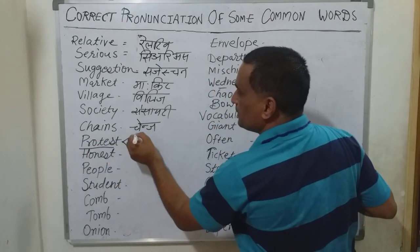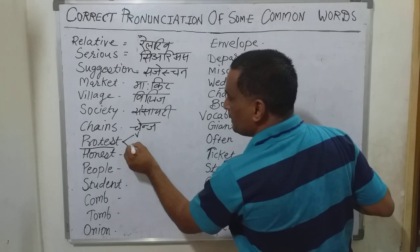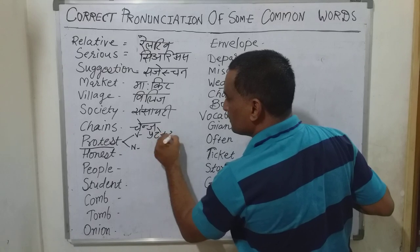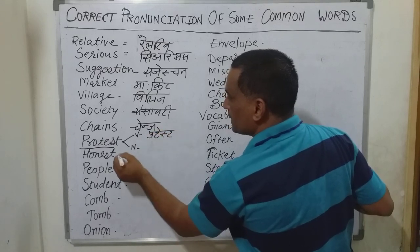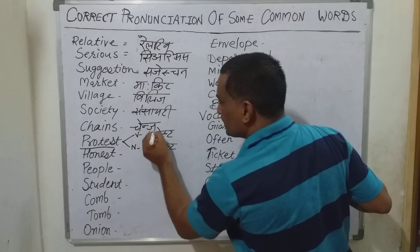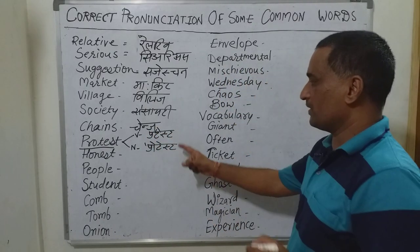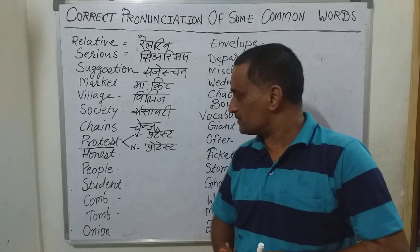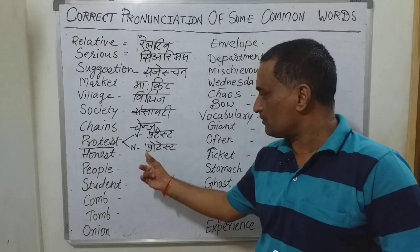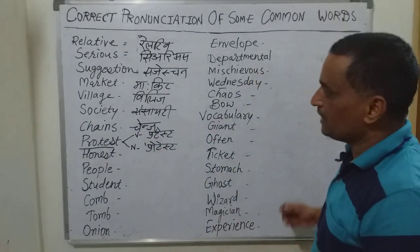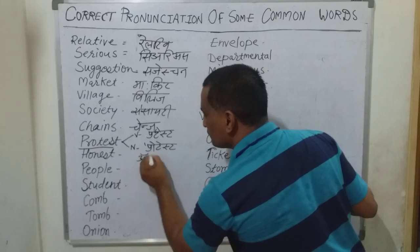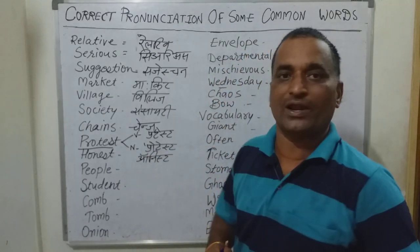The next word, 'protest,' is used in two forms. When used as a verb, we say 'proTEST,' and when used as a noun form, we say 'PROtest.' For example: 'The agitators were protesting on the streets, and I will not accept your protest.' The next word is 'honest' — it means straightforward, and must be pronounced 'honest,' not 'honest' — some people mispronounce it terribly.